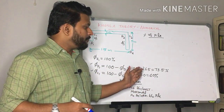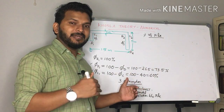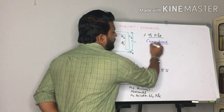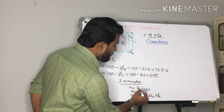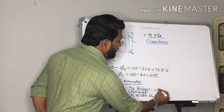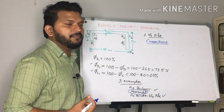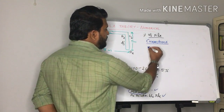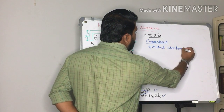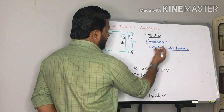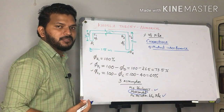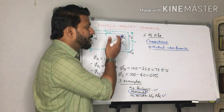Since these are assumptions and not practical conditions, we need to apply corrections to the theoretical values. The corrections required are: a depth correction, a mutual interference correction between the two piles, and a slope correction. These corrections adjust the theoretical Khosla's values to account for practical conditions.